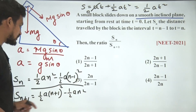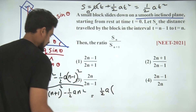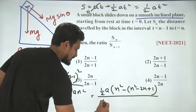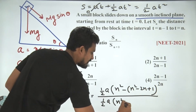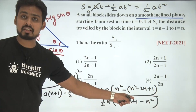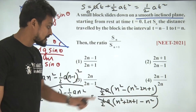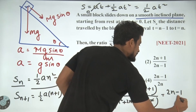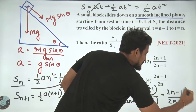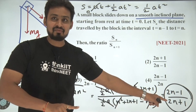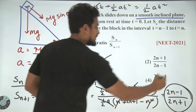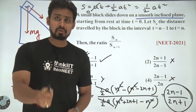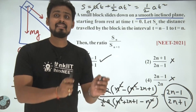Dividing as asked: the numerator becomes ½A·[n² − (n² − 2n + 1)] = ½A·(2n − 1), and the denominator becomes ½A·[(n+1)² − n²] = ½A·(2n + 1). Cancelling ½A from numerator and denominator, and cancelling n² terms, we get (2n − 1) upon (2n + 1) as the final answer. Matching with options, option 1 is correct.